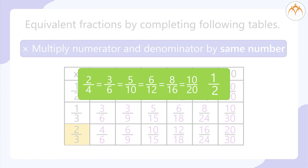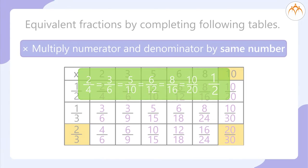So now we find: 2/4 = 3/6 = 5/10 = 6/12 = 8/16 = 10/20. All of these are equivalent fractions of 1/2.